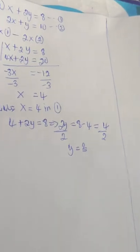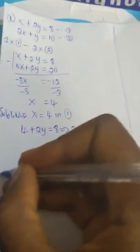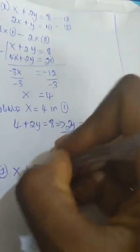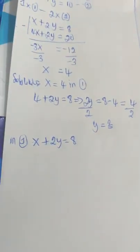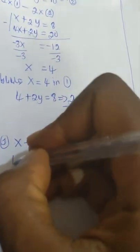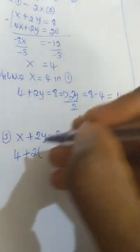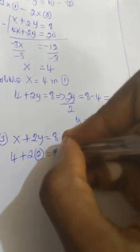The value of x is 4 and the value of y is 2. To verify that we have solved correctly, let's take equation one. Equation one is given by x plus 2y equal to 8. The value of x is 4, plus 2 times y. The value of y is 2, equal to 8.